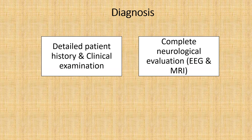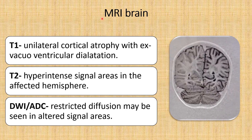Diagnosis is made by detailed patient history, clinical examination, complete neurological evaluation, EEG, CT brain, and MRI brain. CT brain in the early stage of Rasmussen's encephalitis remains normal, while in the later stage cortical atrophy can be seen. That is why we did not perform a CT brain in our case.